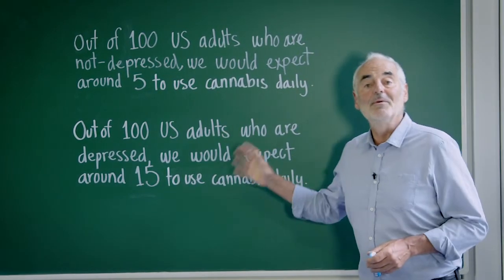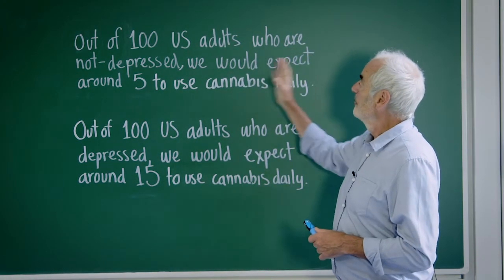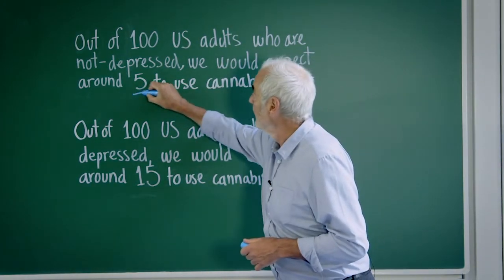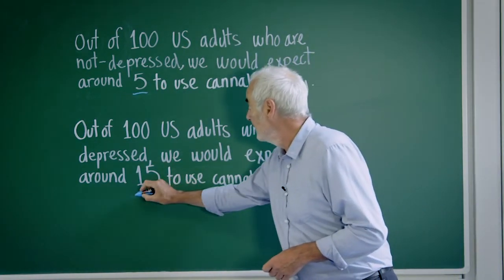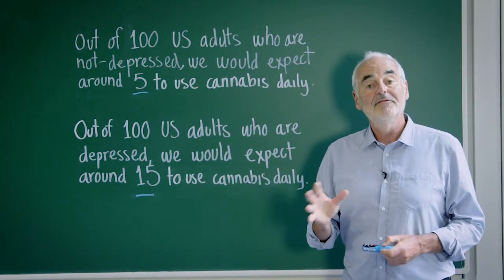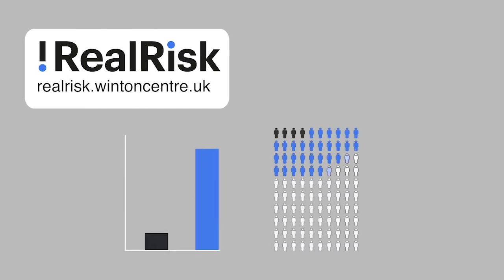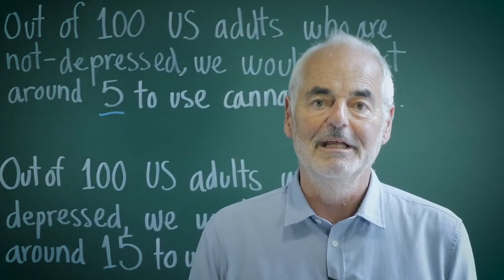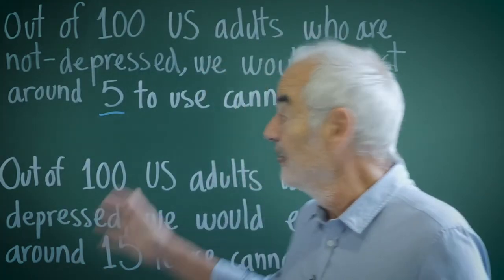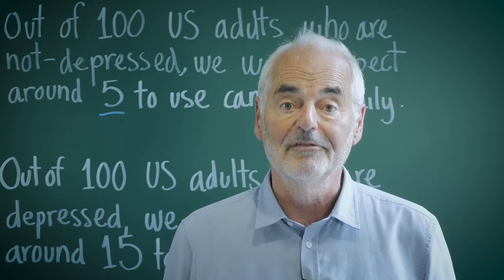We can go even further by turning percentages into what we call expected frequencies. Here are some example sentences: assuming the results of the study are correct, out of 100 US adults who are not depressed we would expect around five to use cannabis daily; out of 100 US adults who are depressed we would expect around 15 to use cannabis daily. We have a tool called Real Risk that will take the odds ratio and turn it into phrases such as these, and also provide suitable graphics to communicate the results even more clearly. In this video we've gone from a tricky odds ratio in an academic paper and turned it into phrases that people will understand — if you want more help, go to the link to Real Risk in the description.